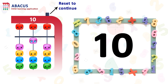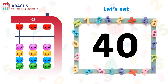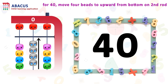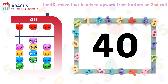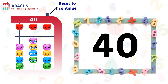Let's go to the next example. We have to reset the Abacus. To reset the Abacus, we have to press the top right button. So let's reset and continue. Here we have the number 40. So let's set 40. For 40, we have to move 4 bits upward from the bottom on the tens column.